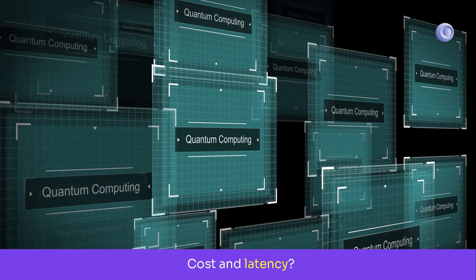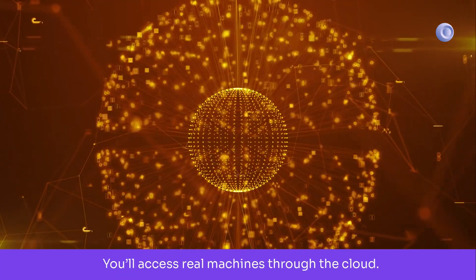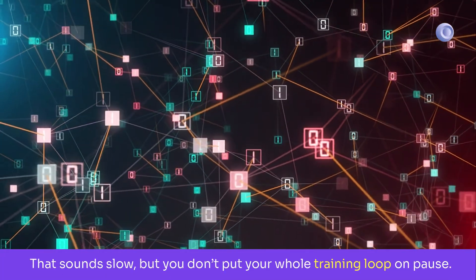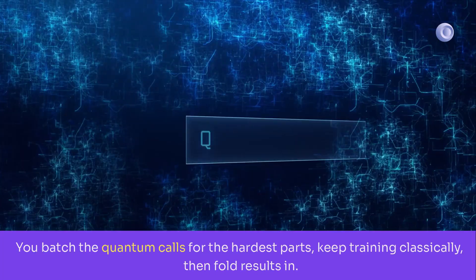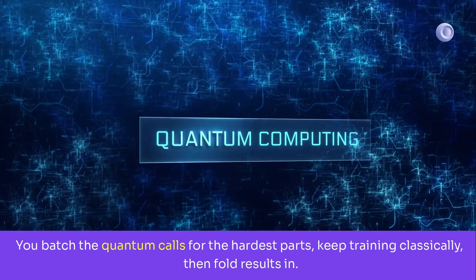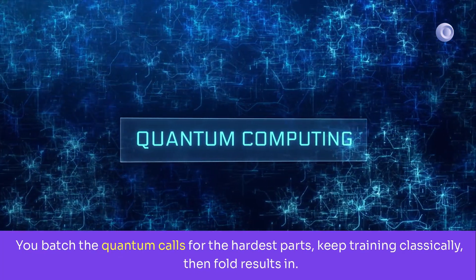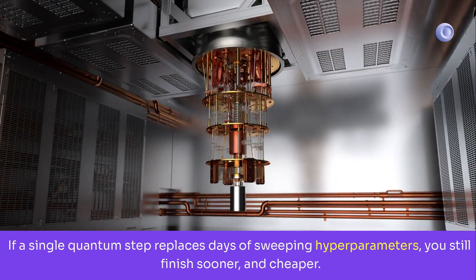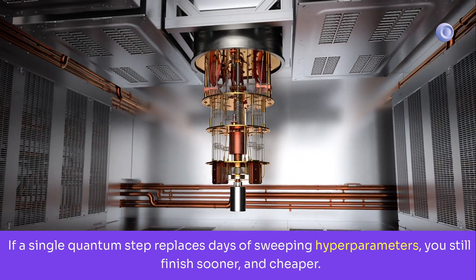Cost and latency? You'll access real machines through the cloud. That sounds slow, but you don't put your whole training loop on pause. You batch the quantum calls for the hardest parts, keep training classically, then fold results in. If a single quantum step replaces days of sweeping hyperparameters, you still finish sooner and cheaper.